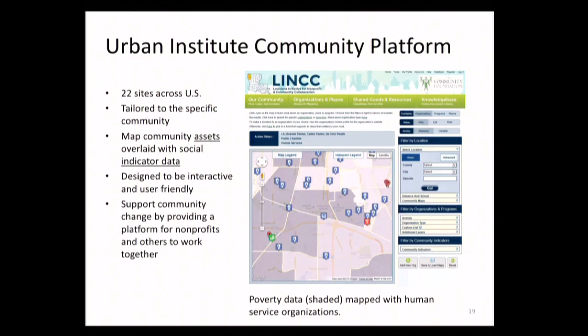There are 22 Community Platform sites across the country. They all have that base data as described, but some have deeper data. It's that marrying of assets with indicators. This example from the Louisiana Initiative for Nonprofit and Community Collaboration shows poverty data shaded in the background and charity locations plotted on the map — you could hover over each to see the name, capacity, staff count, and other details.